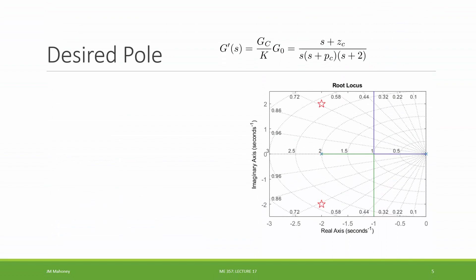So I form my grl or the g prime, which is going to be the controller without the gain times the plant. So we have this s plus zc over s, s plus pc, s plus 2. I'm keeping it factored here because then it's very easy to see where the zeros and the poles are. So the z's I identify as zc and the p values as 0, positive 2, positive pc.